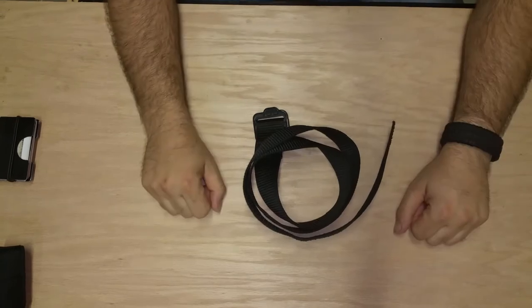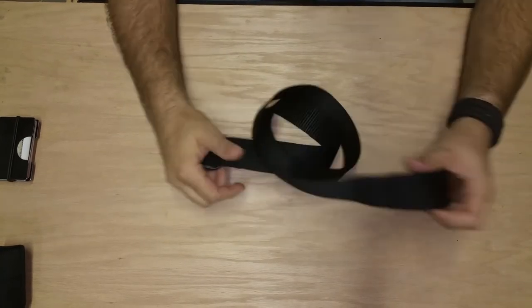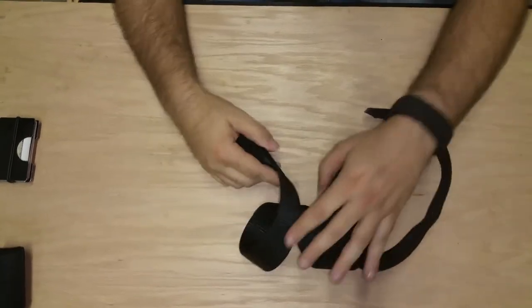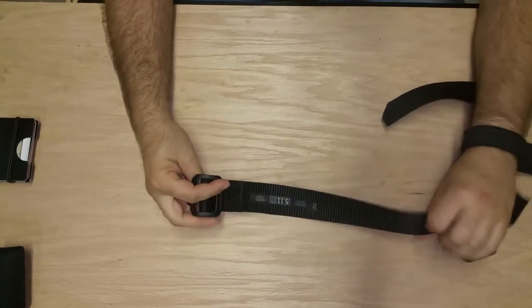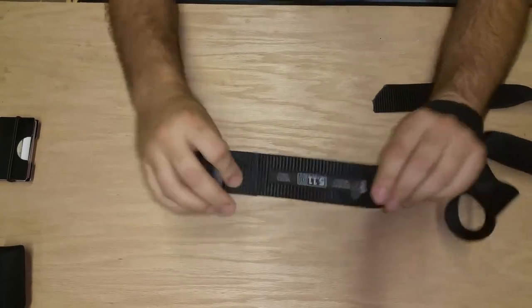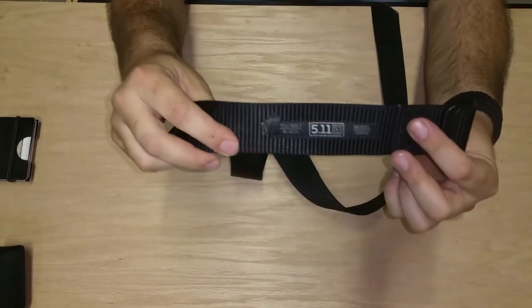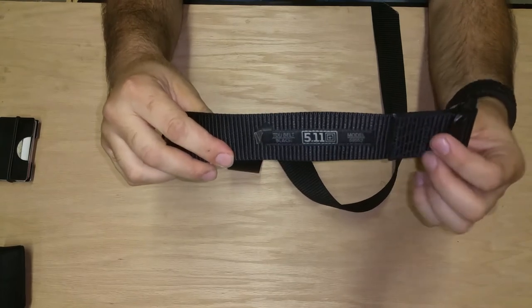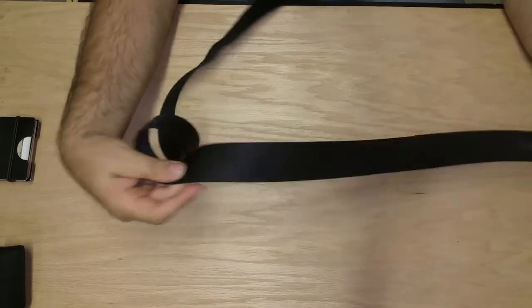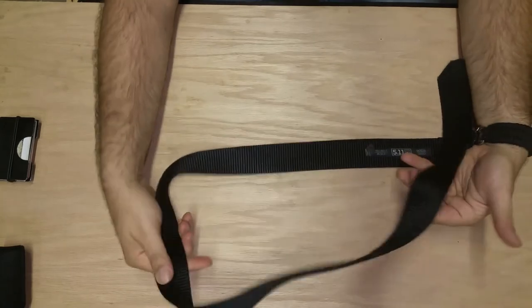Then the other thing I use every day, the belt. This is a 5.11 TDU belt. And it has to be about the best belt I've ever had. I've had this for a couple years now. It still looks new, not a lot, no fraying.